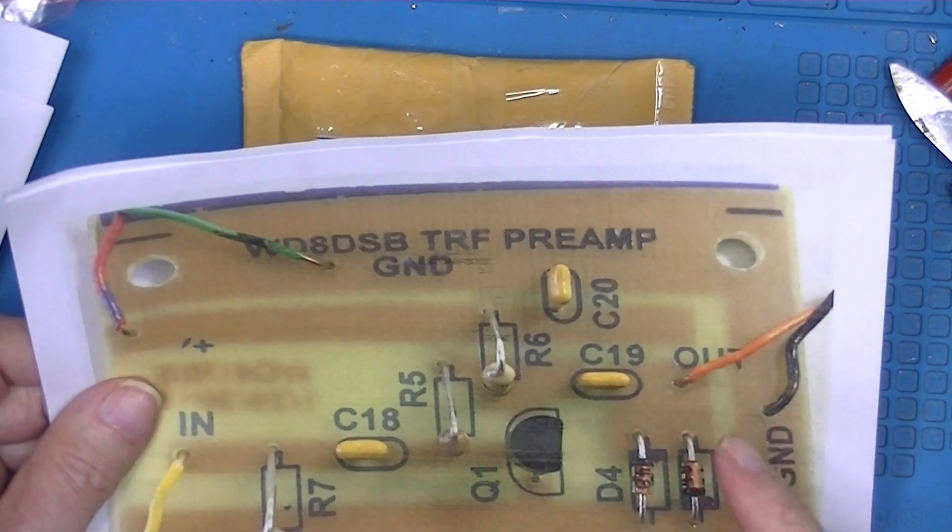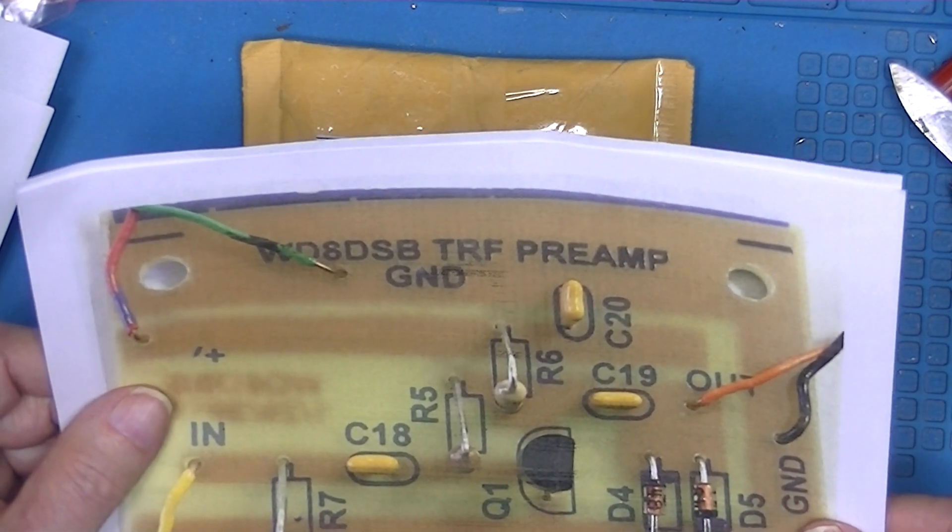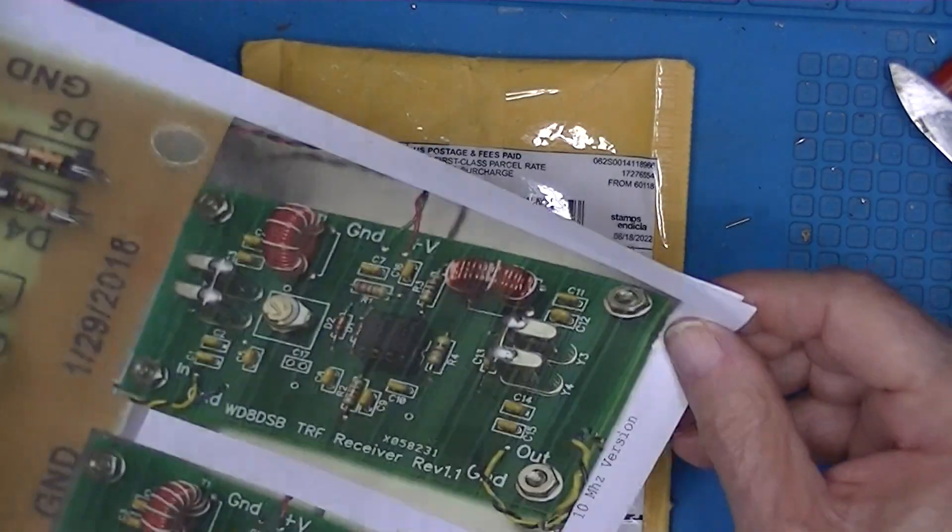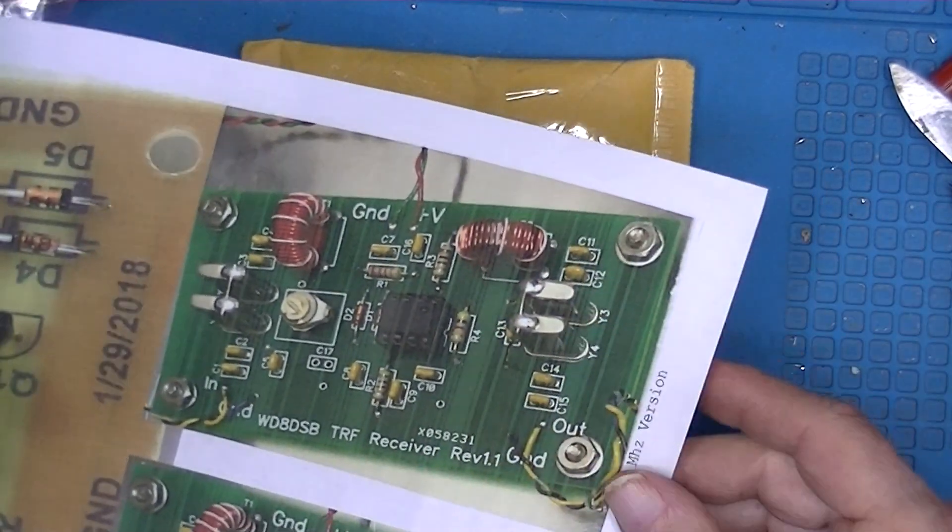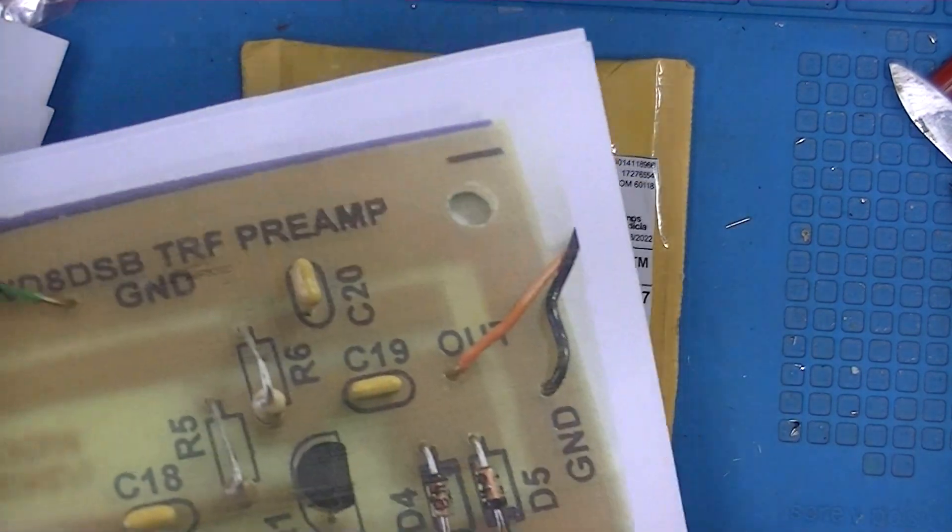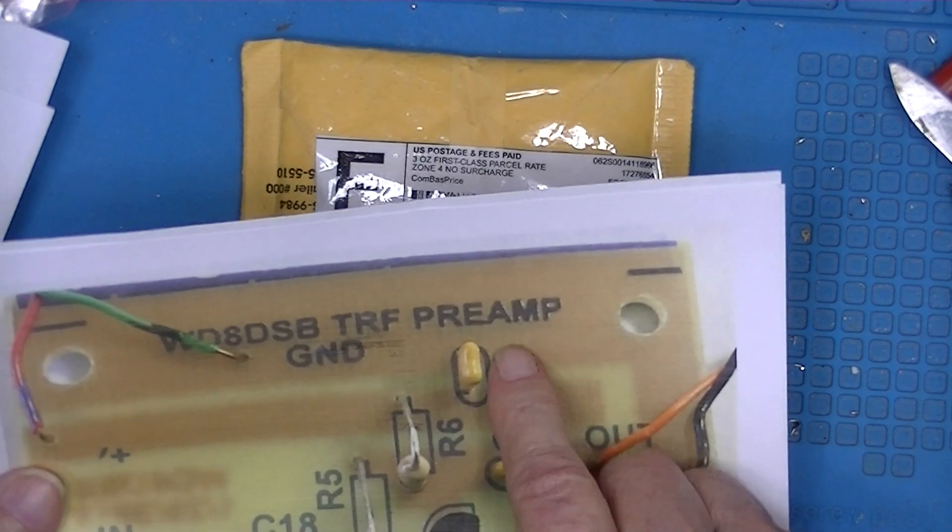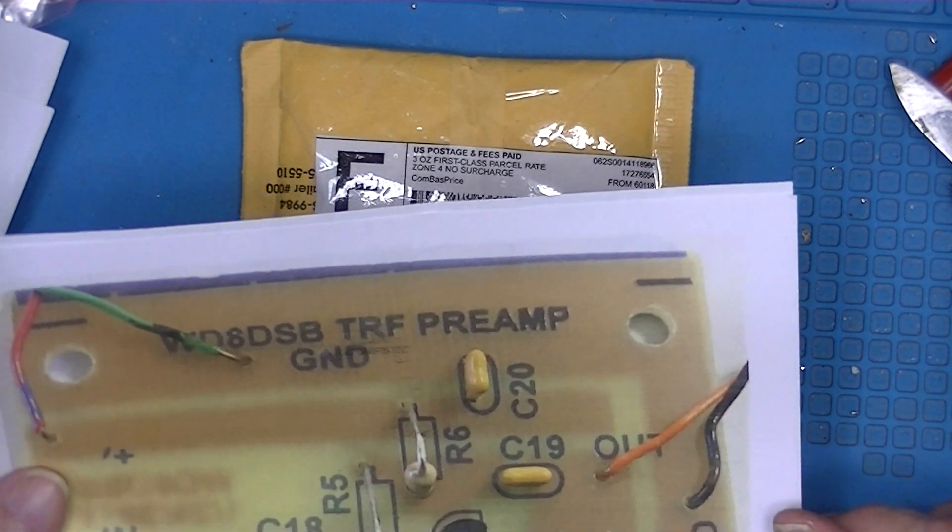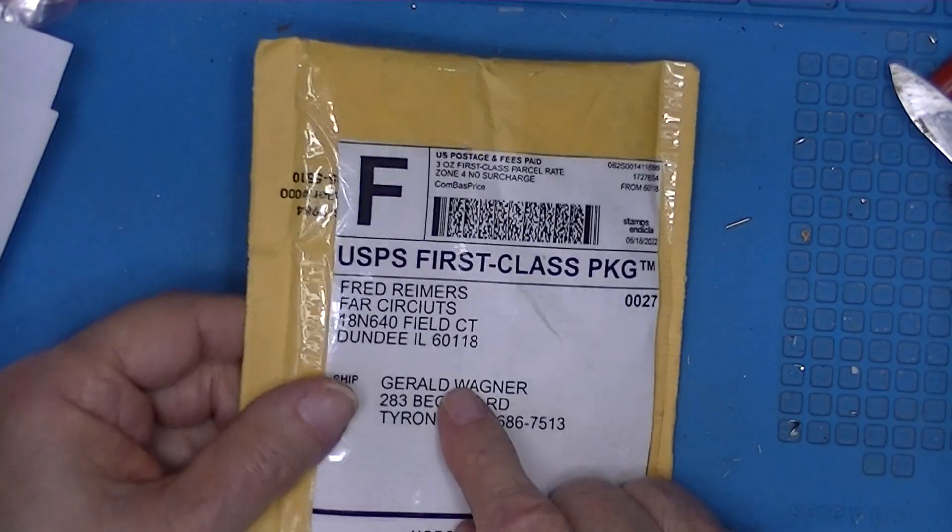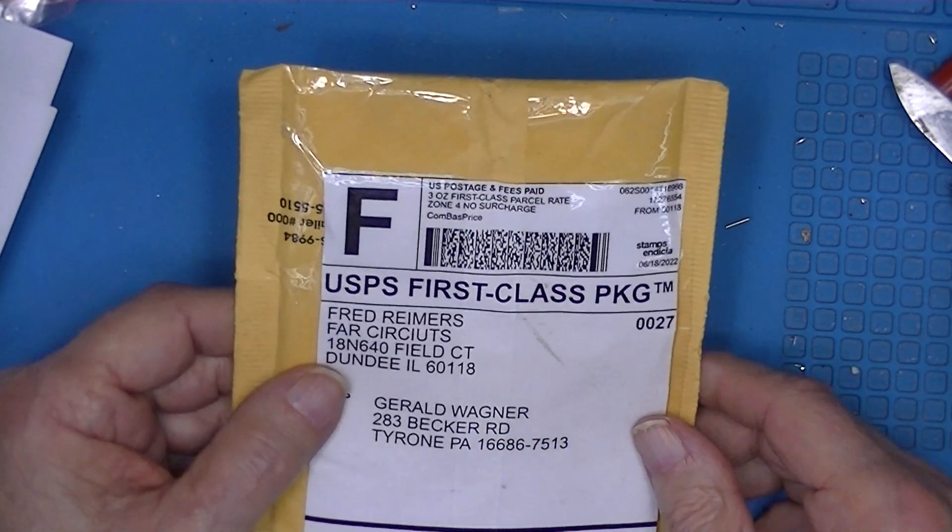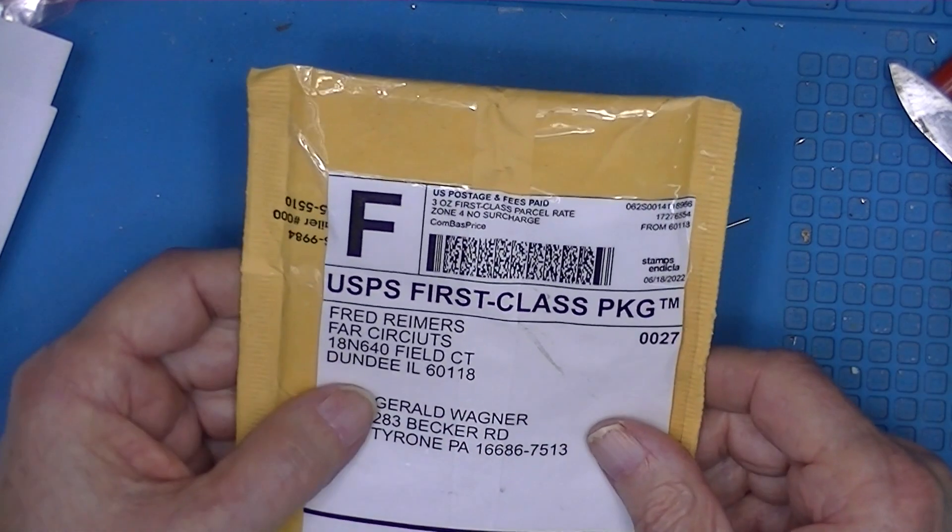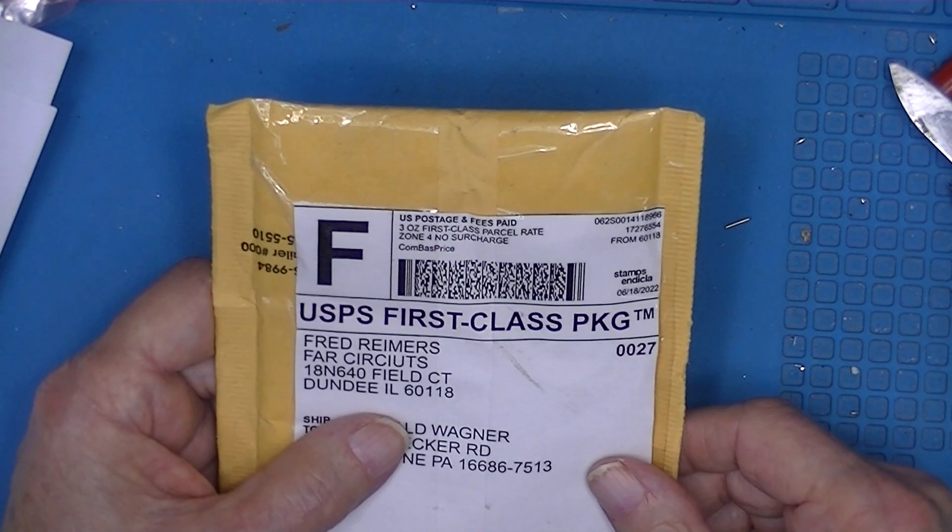I also ordered two boards to build what he calls a pre-amplifier, but I would call a post-amplifier. It's intended to be placed after the receiver—in other words, it amplifies the output of the receiver. I ordered two of these and two of these. I have ordered from this fellow before. He's very nice. His website has a huge listing of boards in stock.